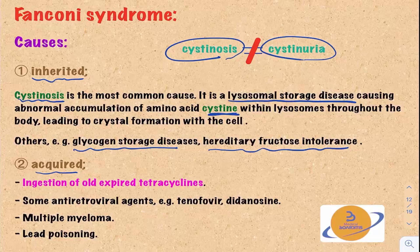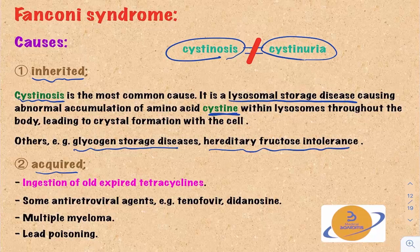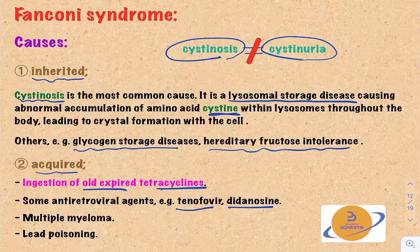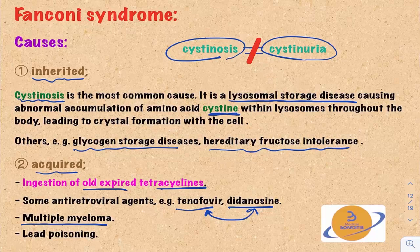Acquired causes of Fanconi syndrome are even more high yield. The first is ingestion of old, expired tetracyclines, which become converted into toxic substances that damage the proximal convoluted tubule cells. Some antiretroviral agents like tenofovir and didanosine can also damage these cells and lead to Fanconi syndrome, especially when combined together. Multiple myeloma and lead poisoning are also causes.